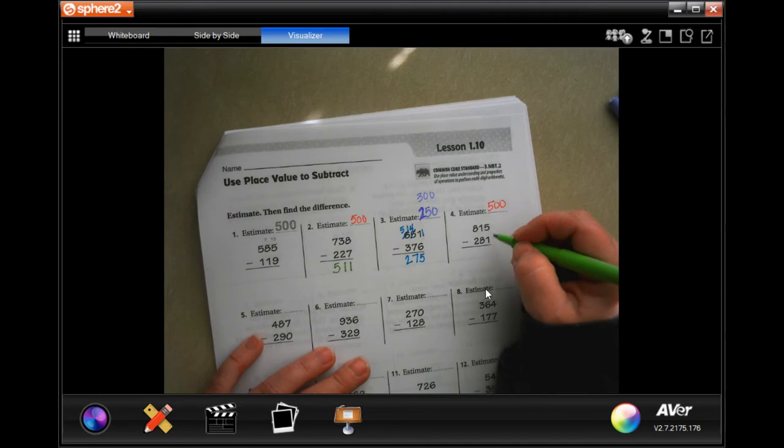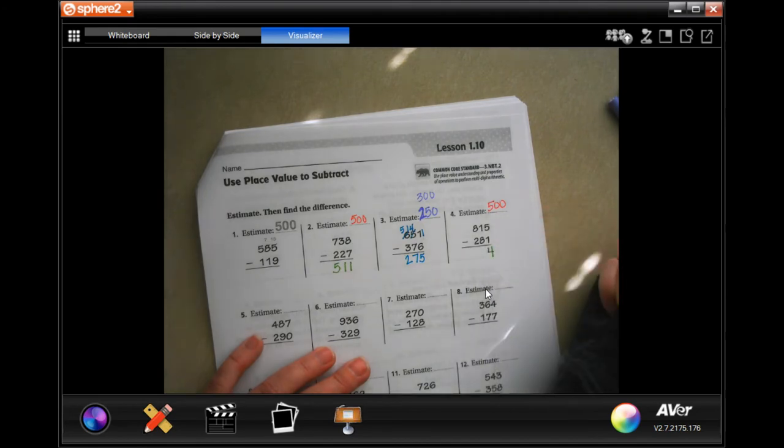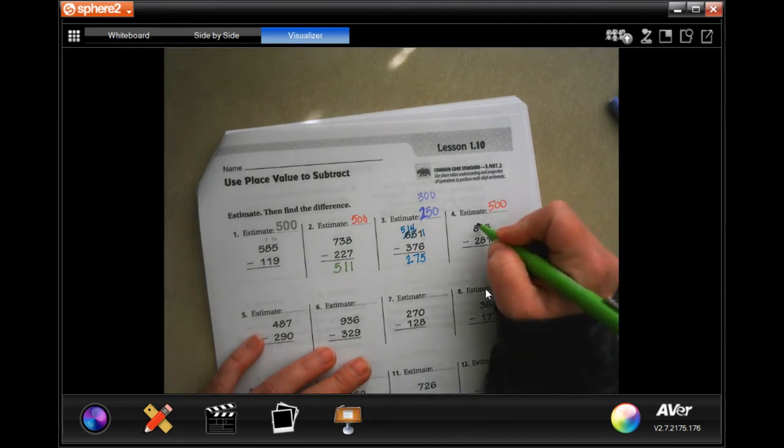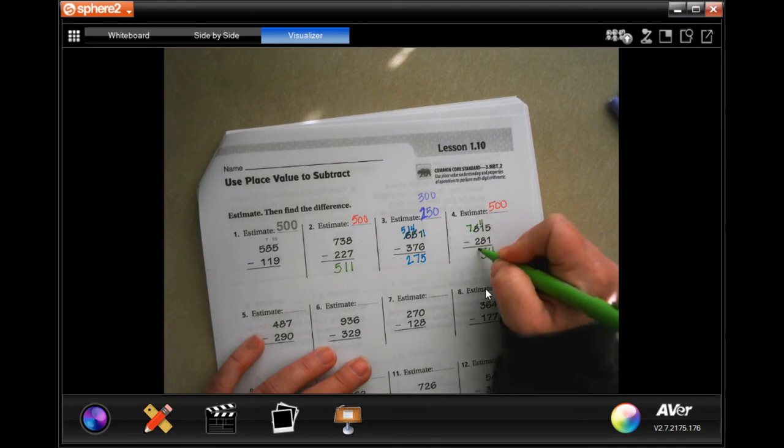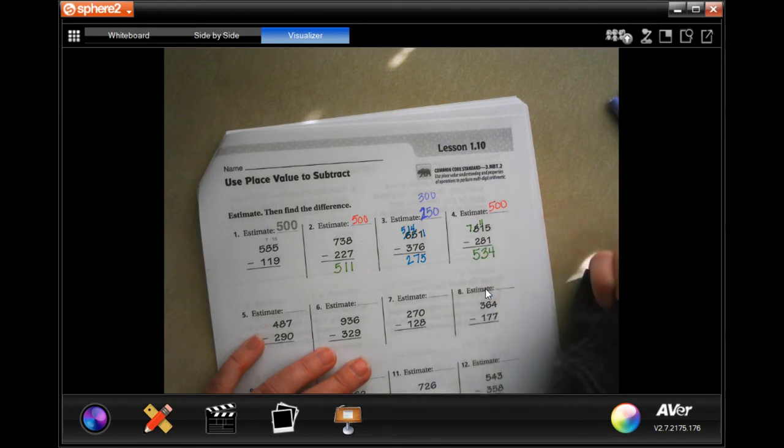Now, 5 minus 1 is 4. 1 cannot take away 8. Borrow one. Now we have 11 minus 8, which is 3. 7 minus 2 is 5.